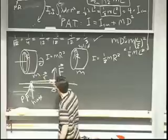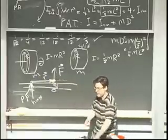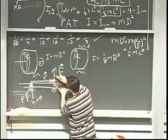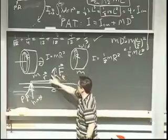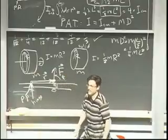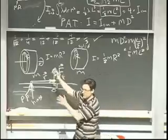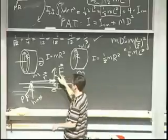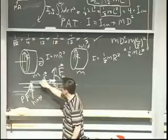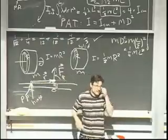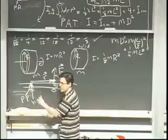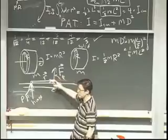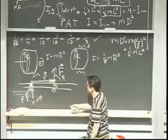Beta is the angle between r and F. We can move vectors around in Euclidean geometry to figure out what the angles are. So here's my radius vector and here's my force vector — this angle right here is my beta. Sine of beta equals sine of pi minus beta, so it doesn't really matter which you pick. Beta is defined as the angle between vector r and vector F, where F is the force exerted on the object and r is the radius from the pivot point to where that force acts.